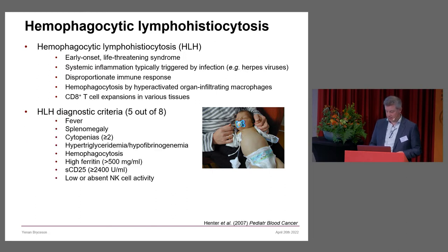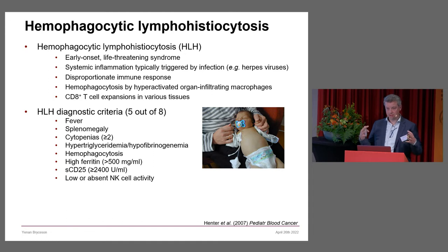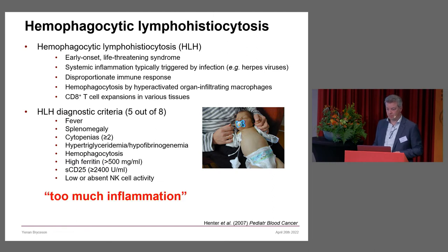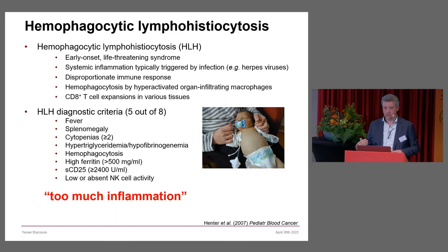These days, HLH is typically defined by meeting five out of eight criteria for hyperinflammation. There's been a lot of discussion in the literature about what this should be called — HLH or macrophage activation syndrome. Basically, what one can agree on is that it's too much inflammation, where radical immune suppression is required, despite often having severe infections.